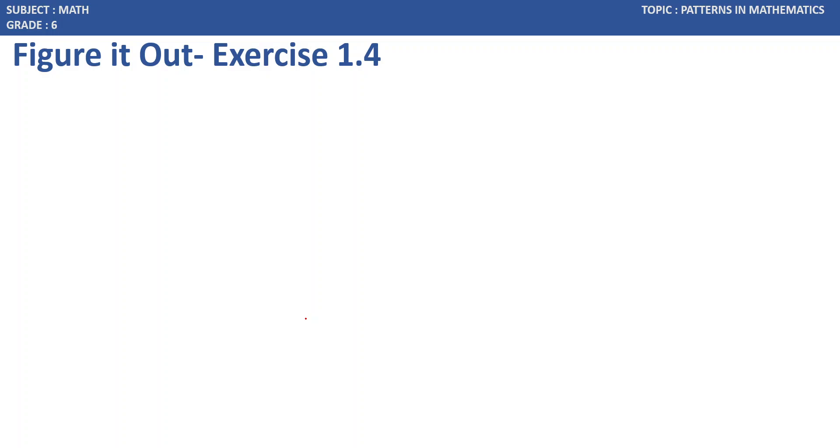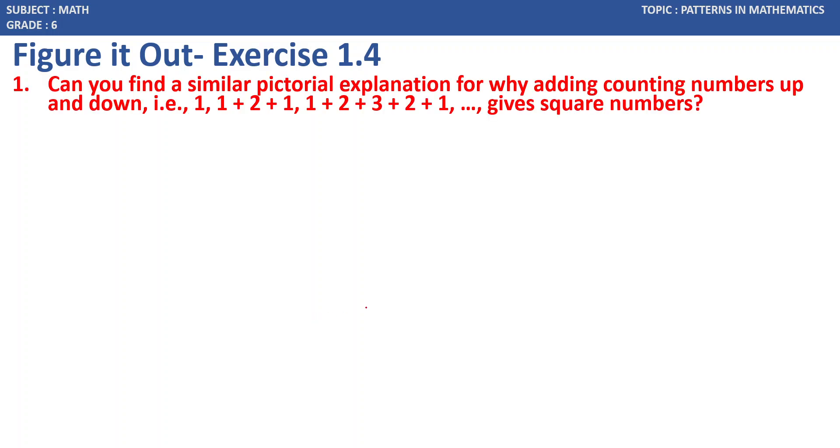Let us see Exercise 1.4, first question. Can you find a similar pictorial explanation for adding counting numbers up and down: 1, 1 plus 2 plus 1, 1 plus 2 plus 3 plus 2 plus 1? Let us see how we can represent this. Here, counting the numbers 1, 2, 3—this given sequence gives us square numbers.